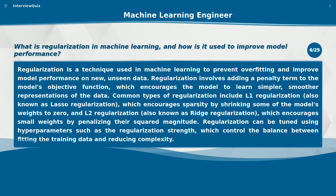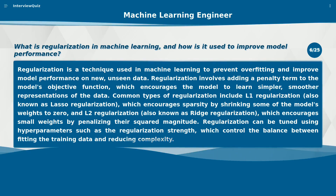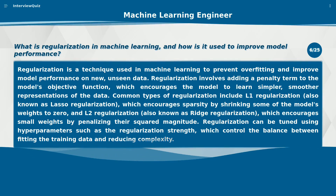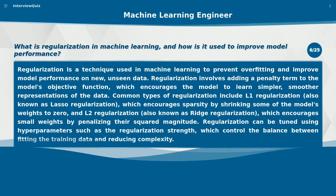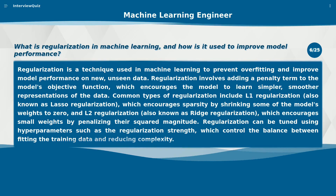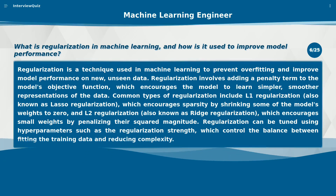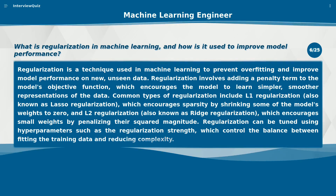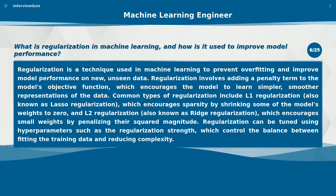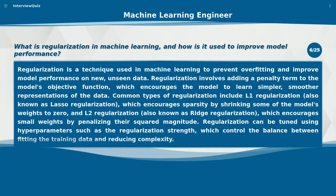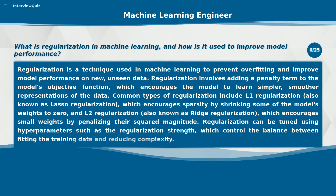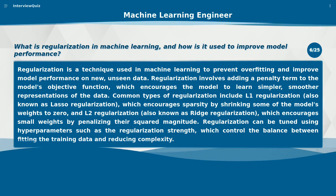Common types of regularization include L1 regularization, also known as lasso regularization, which encourages sparsity by shrinking some of the model's weights to zero, and L2 regularization, also known as ridge regularization, which encourages small weights by penalizing their squared magnitude. Regularization can be tuned using hyperparameters such as the regularization strength, which controls the balance between fitting the training data and reducing complexity.